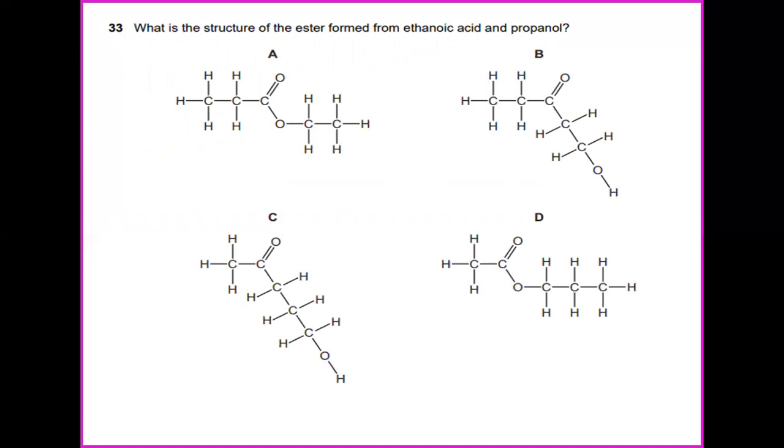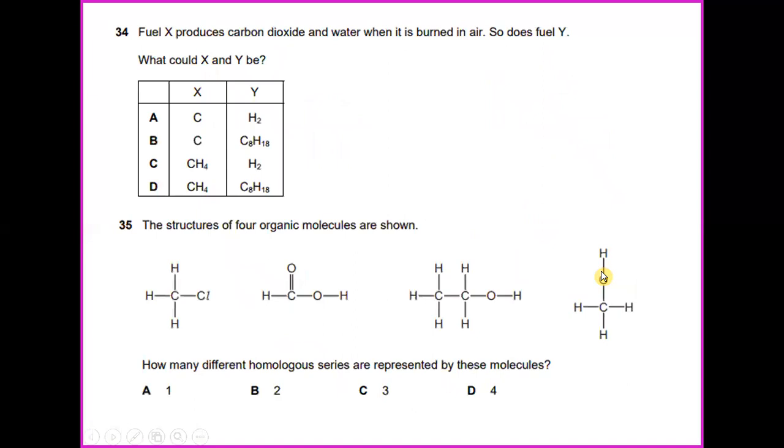What is the structure of the ester formed from methanoic acid and propanol? If you can see it is CH3CH2CH2OH plus CH2O2 to form C4H8O2 plus H2O. And also it can be written as CH3CH2CH2 and CH3. The answer would be 33D. Fuel X produces carbon dioxide and water when it is burned in the air. So does fuel Y. What could X and Y be? X would be octane and Y could be ethanol. So the answer would be D.